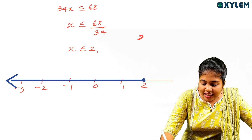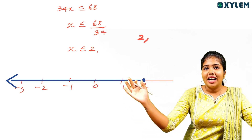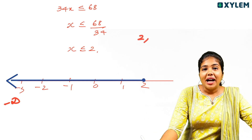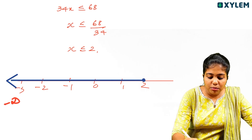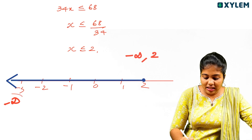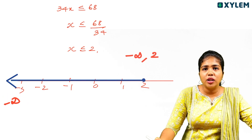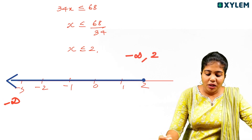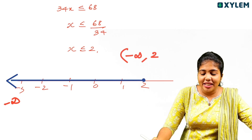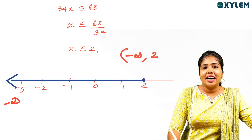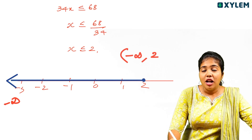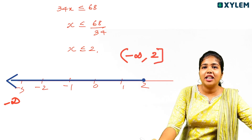So 2 should be on the right side. The solution in interval notation is minus infinity to 2. Now, 2 is a closed interval because the inequality is less than or equal to — so it's a closed bracket at 2. If it were strictly less than, the interval would be open. But less than or equal to means the interval is closed.